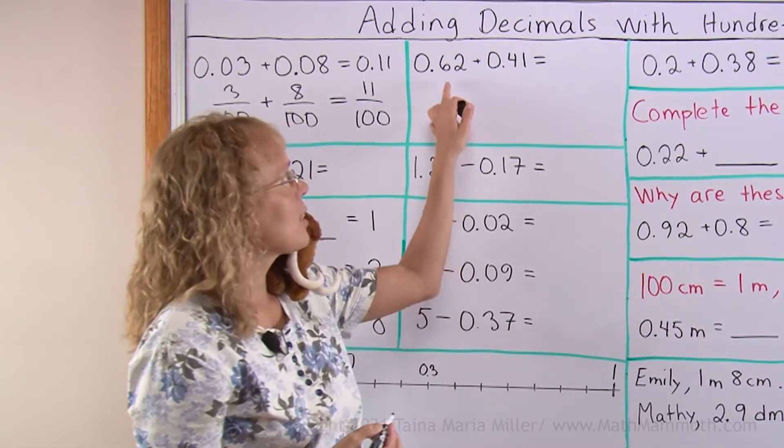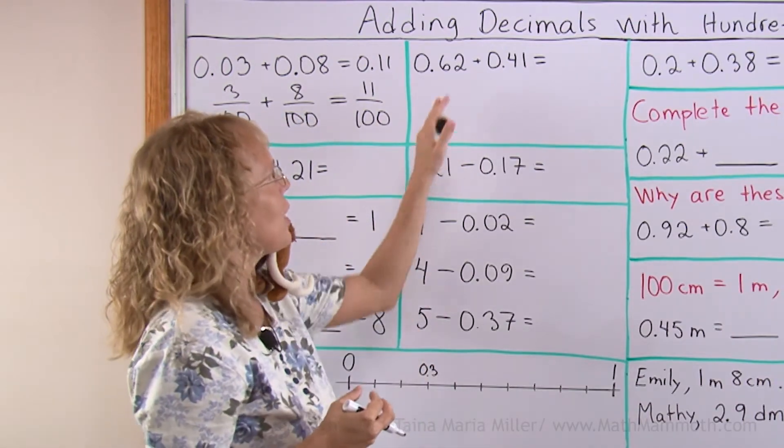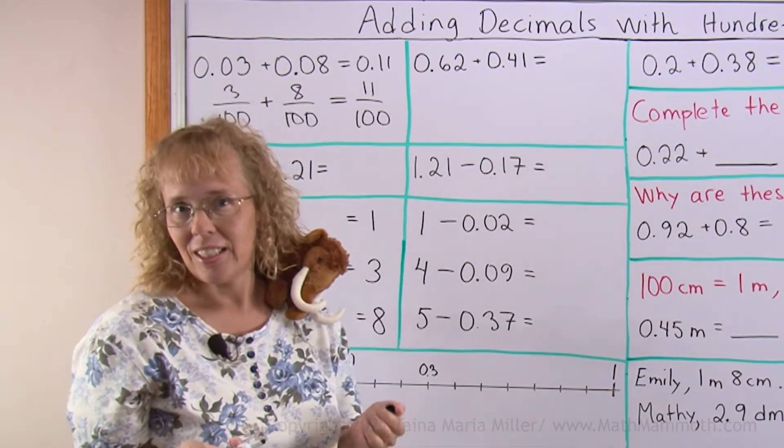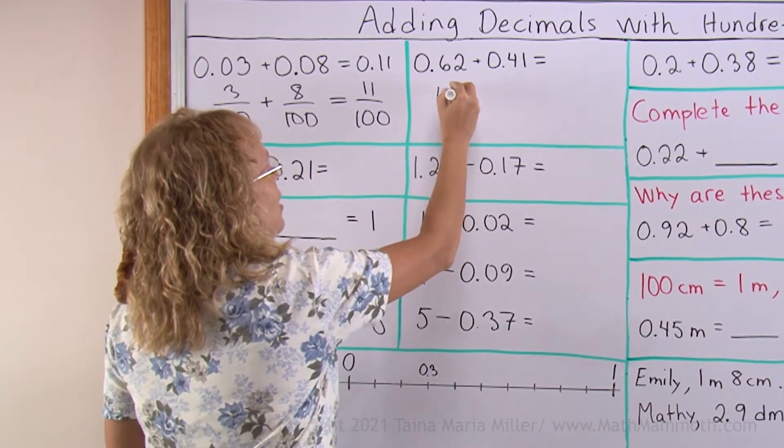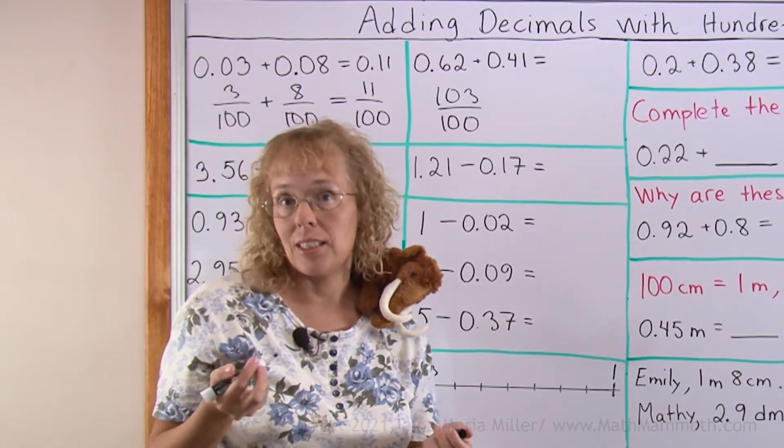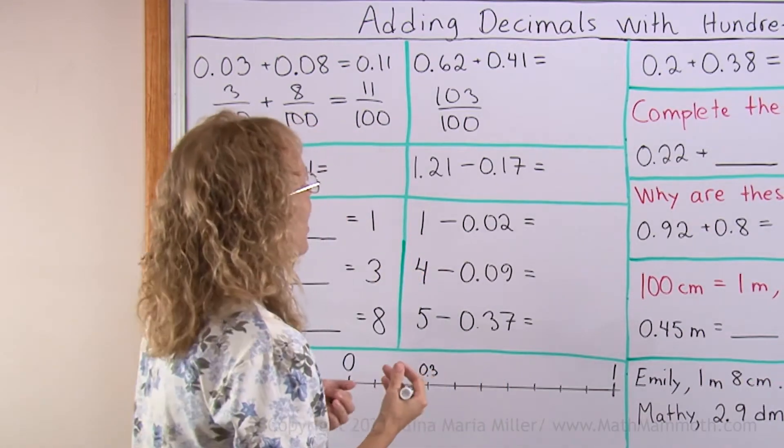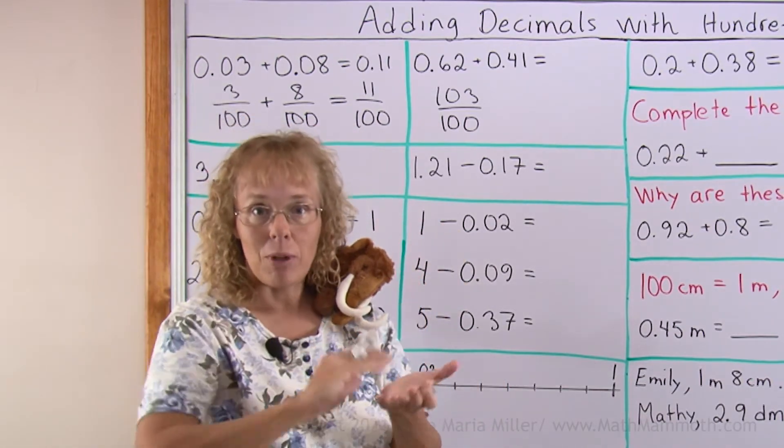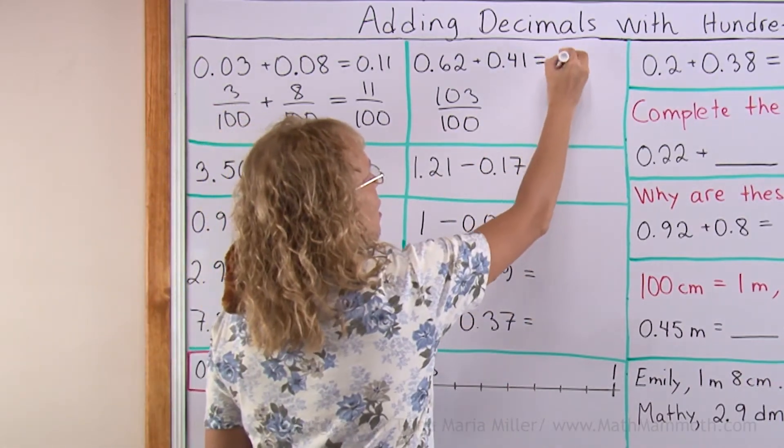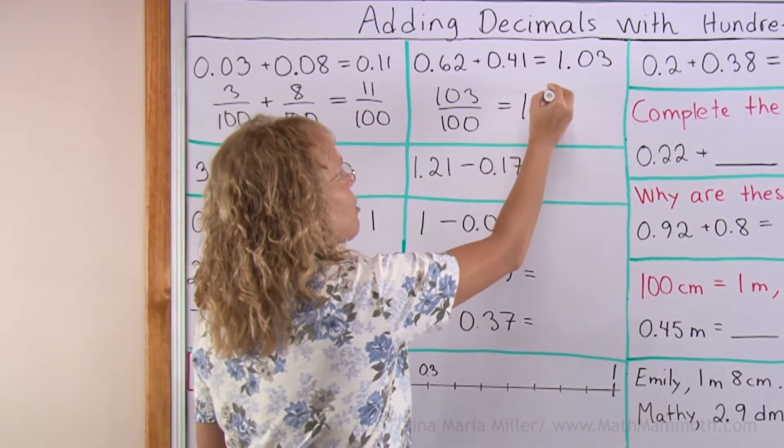Now over here we have sixty-two hundredths and forty-one hundredths, so how much does that make? We can add sixty-two and forty-one, the hundredths, and we get one hundred and three hundredths, right? One hundred and three hundredths, but what is that when written as a decimal? Now we need to notice that this makes more than one. Hundred hundredths makes one, and then we have three hundredths left over, so to speak. So we have one, and then three hundredths. As a mixed number you would have like that.